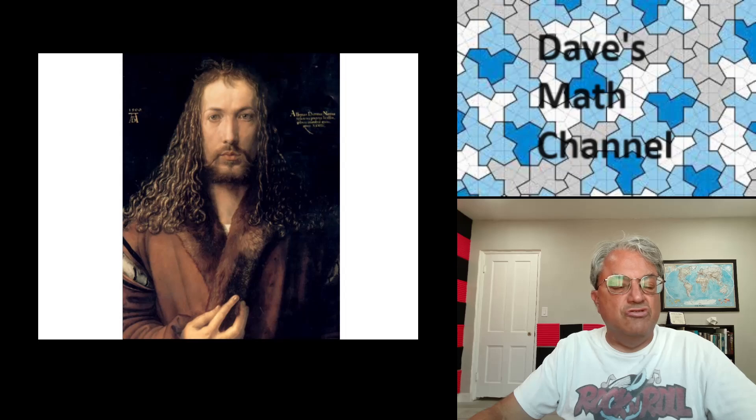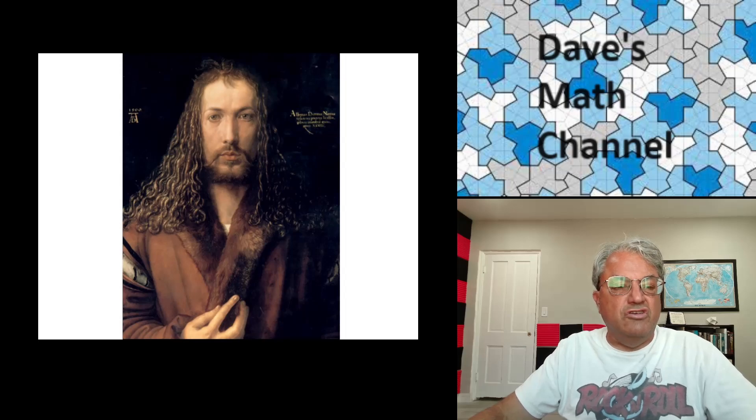Albrecht Durr, in case you don't know, he was a very famous painter. I believe he was from Germany. He was a German Renaissance painter. He's been compared to Leonardo da Vinci. I don't think he was anywhere nearly as great as Leonardo da Vinci. But he was kind of in the same vein. He not only was a great artist, great painter, but he also really liked math. He was also a mathematician. He came up with this magic square for one thing.